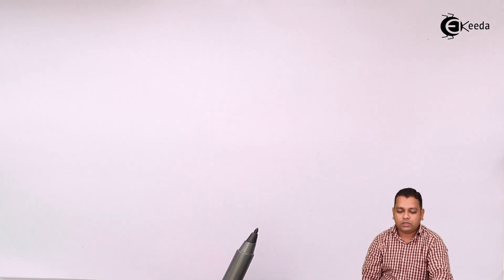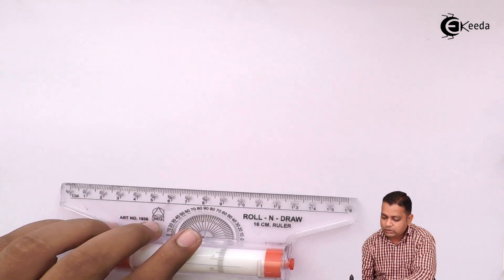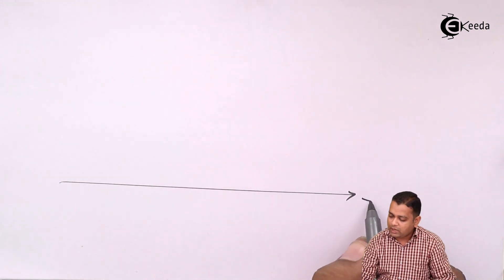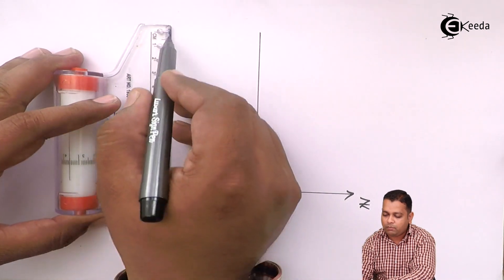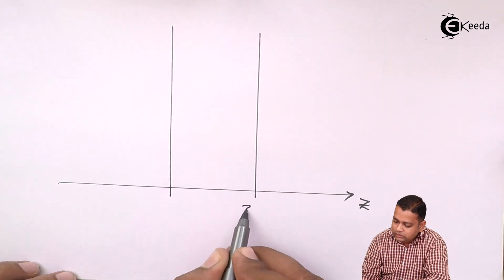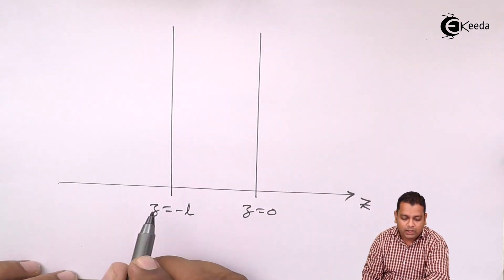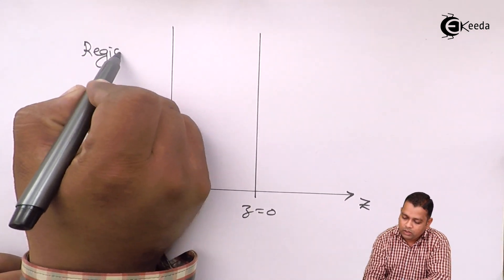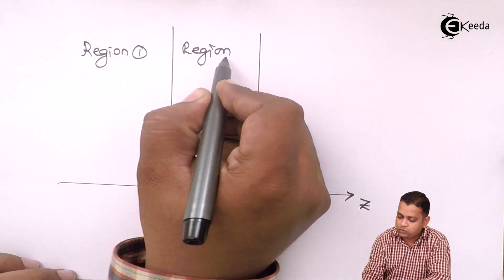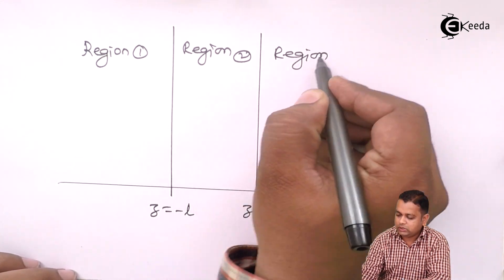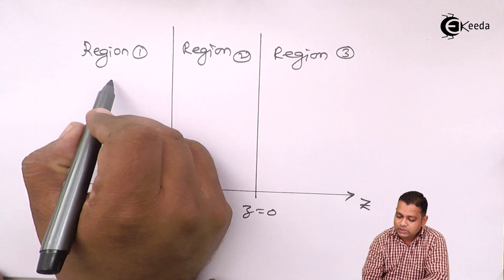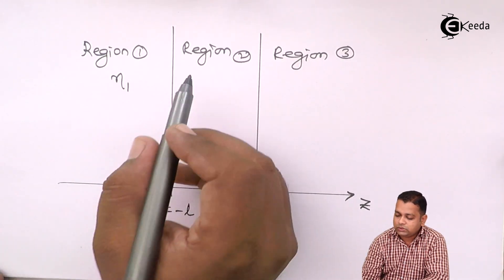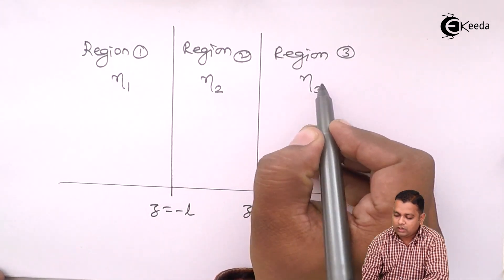For two interfaces, the diagram will be as follows. The generalized axis we have taken from previous topics is the z-axis. At z = 0 we consider the first interface, and at z = −L we take the second interface. Separating out the regions: this will be region 1, this will be region 2, and this will be region 3. The regions are characterized by permeability, permittivity, and conductivity, so we denote intrinsic impedances — eta_1 for region 1, eta_2 for region 2, and eta_3 for region 3.